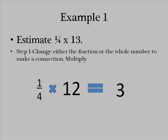Because we're estimating, it's okay to change a number around to make the problem easier for you. What I do is I look for connections. Now I'm not going to find too many connections with a number like 13, but if I just change it once, if I just move down 1 to 12, I can see a connection.